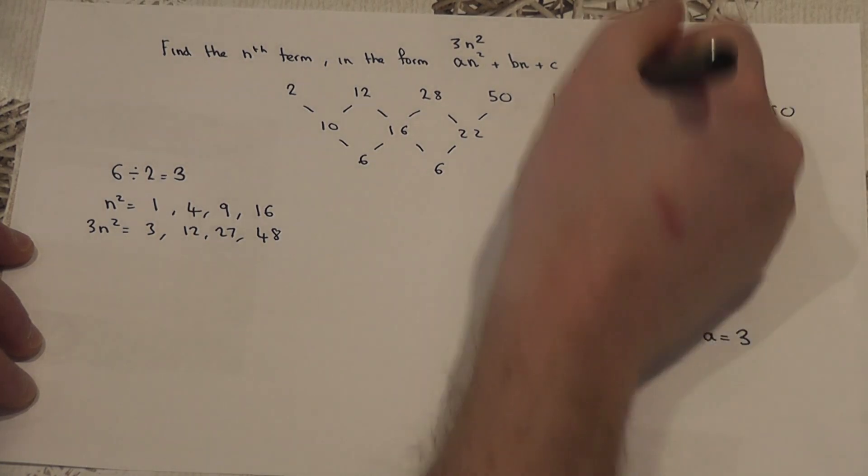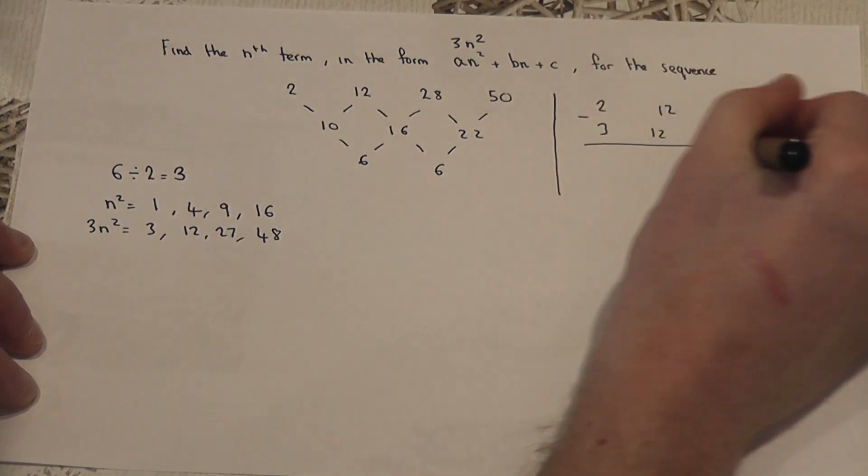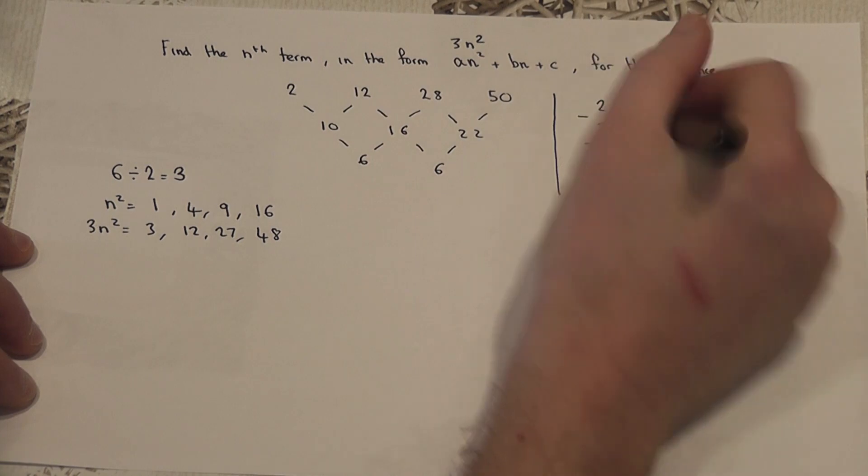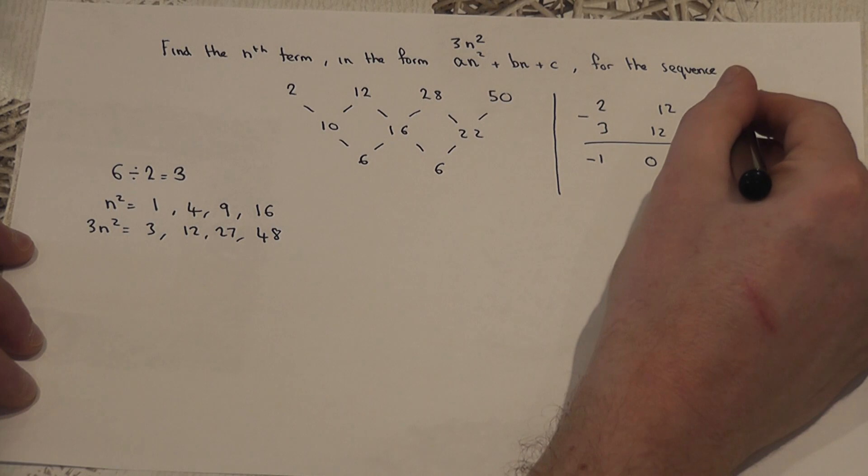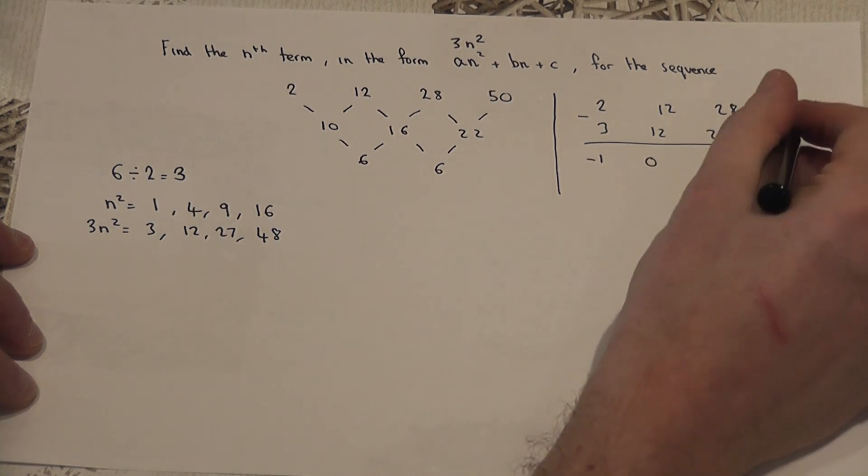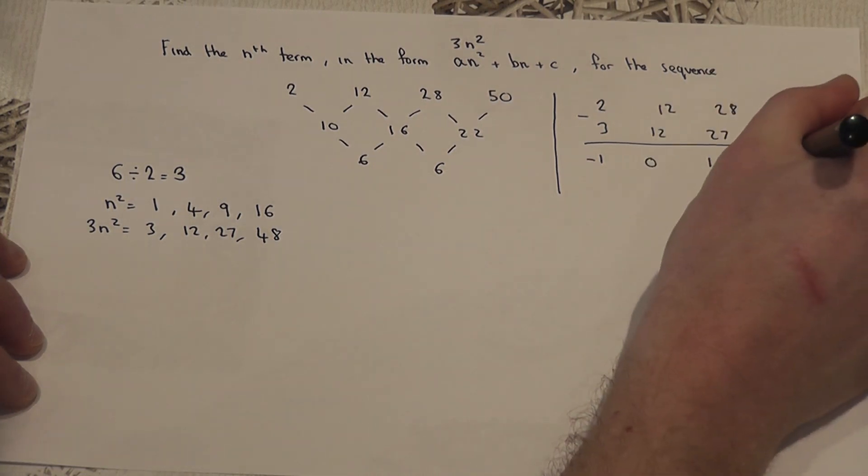Remove means to subtract, then I'm left with the sequence. 2 take away 3 is minus 1, 12 take 12 is 0, 28 take 27 is 1, and 50 take away 48 is 2.